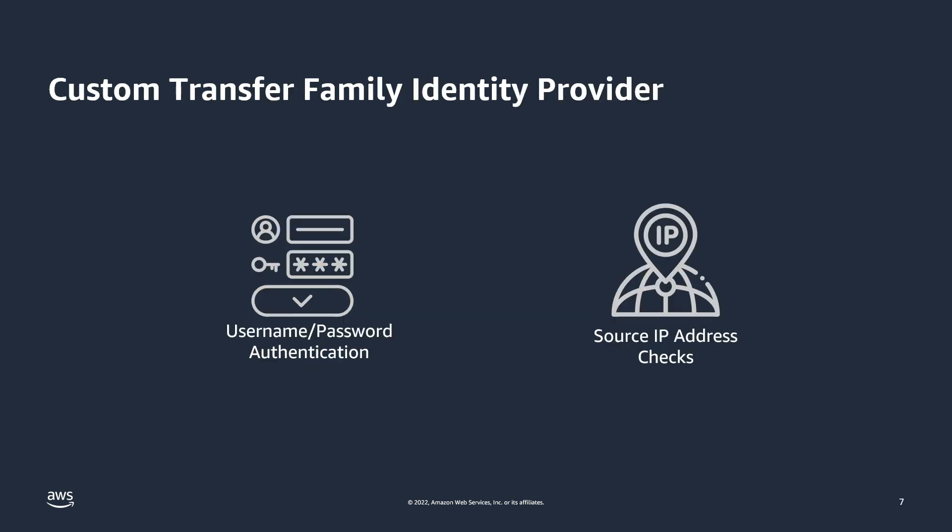In this demo, I will use a custom Secrets Manager-based identity provider for Transfer Family user authentication. Please note that this custom identity provider is optional, as the PGP decryption Lambda function will work the same regardless of how you choose to authenticate users. The reason I'm using this custom identity provider is because it provides several extra features that Transfer Family managed users do not currently support, such as username and password authentication and source IP address checks.